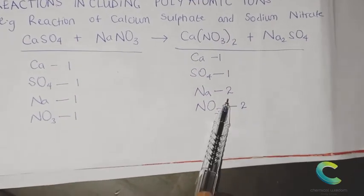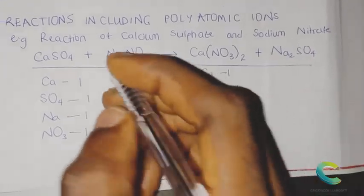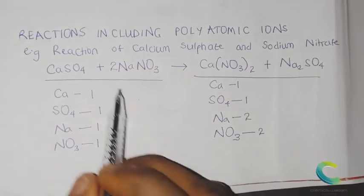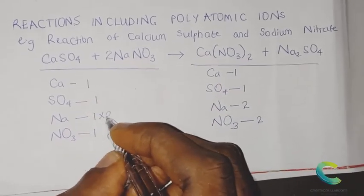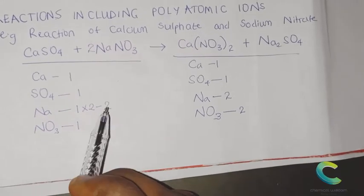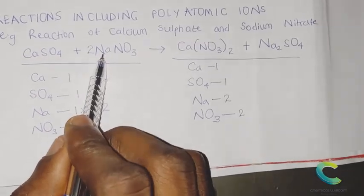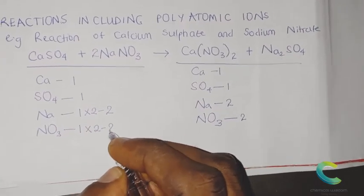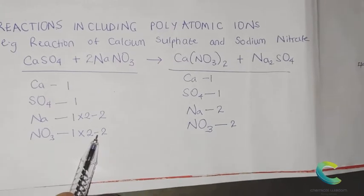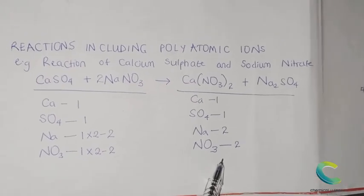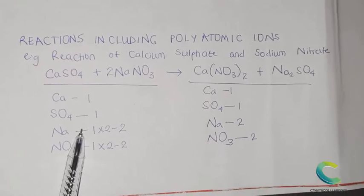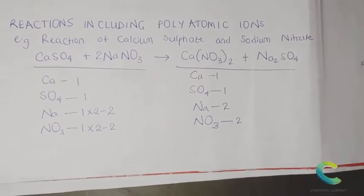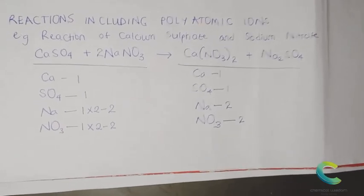The sodium and nitrate are not balanced — one sodium on the left versus two on the right. Introduce a coefficient of two in front of sodium nitrate on the left: two times one gives two sodium atoms. But the two also affects nitrate — two times one gives two nitrate polyatoms. Now we have two nitrate on the left and two on the right. The equation is now balanced with the same number of atoms on both sides.